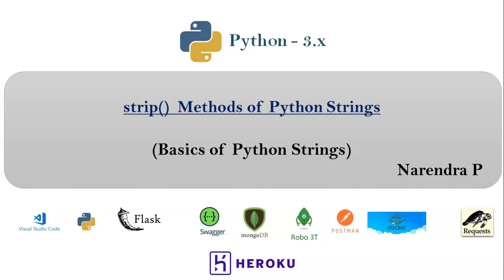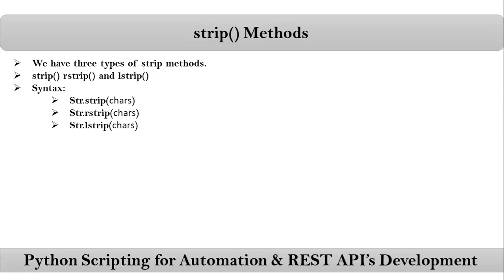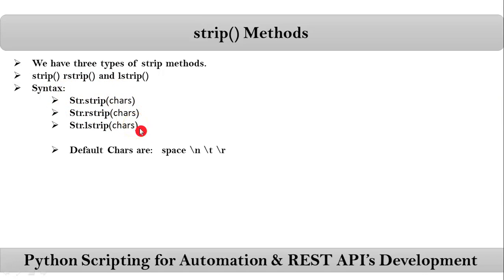Here I will be talking about strip methods of Python strings. We have three types of strip methods: simple strip, right strip, and left strip. The syntax is the same for all three, where str is our string variable. You can also pass your string directly inside quotations. For all three methods, we pass an optional argument char. If you don't pass it, Python will consider the default chars as space, newline, tab, and carriage return.